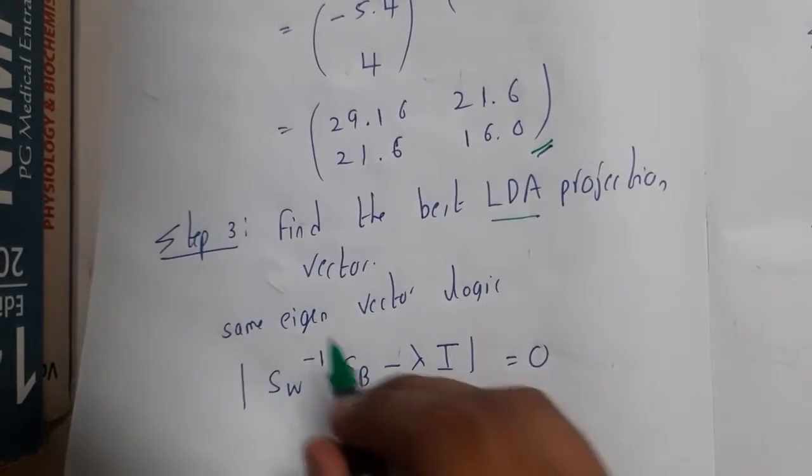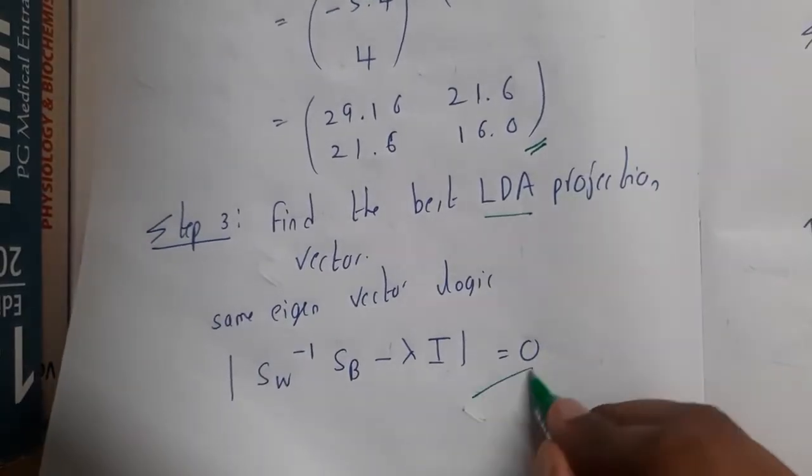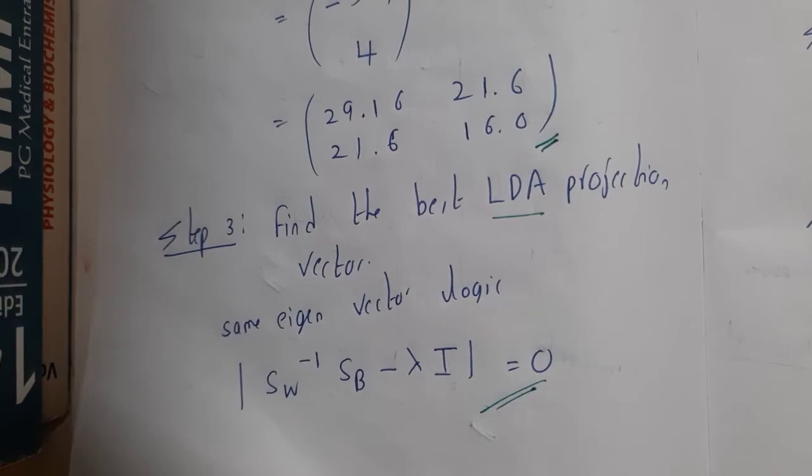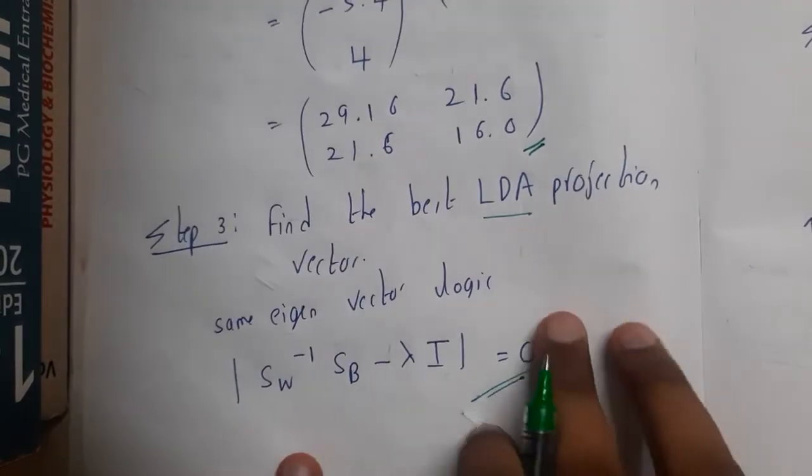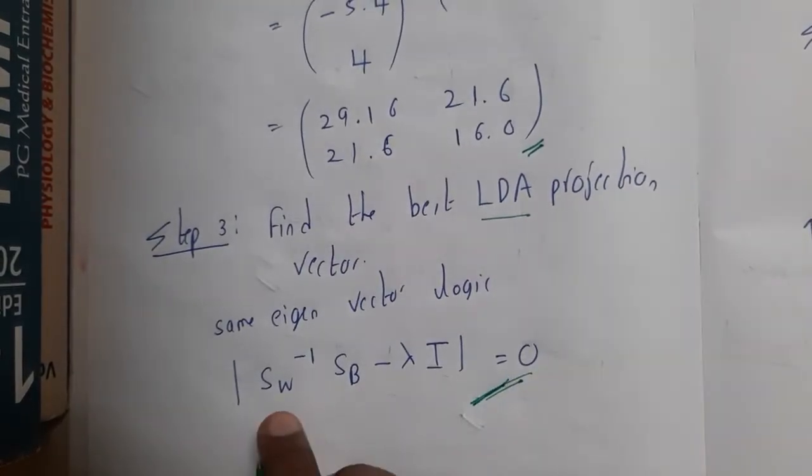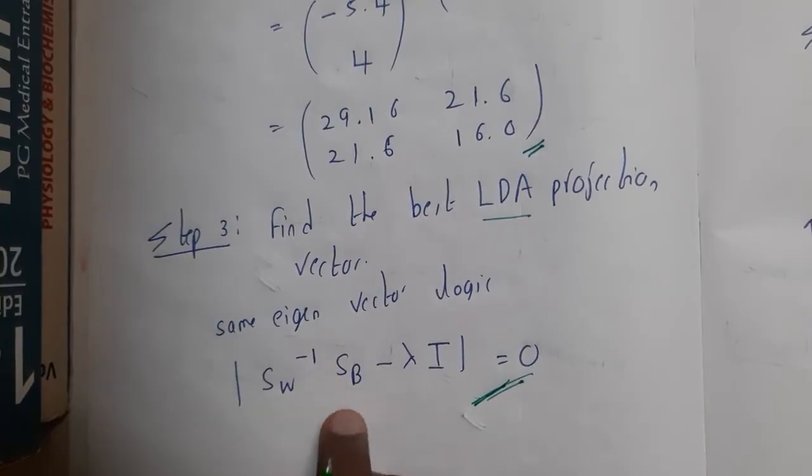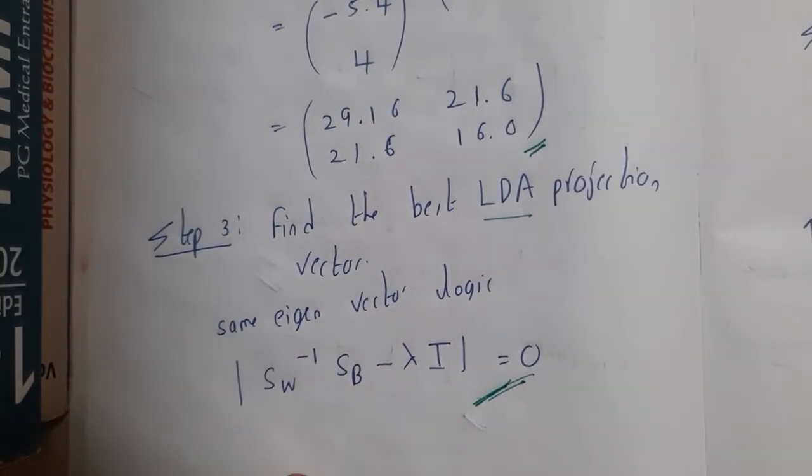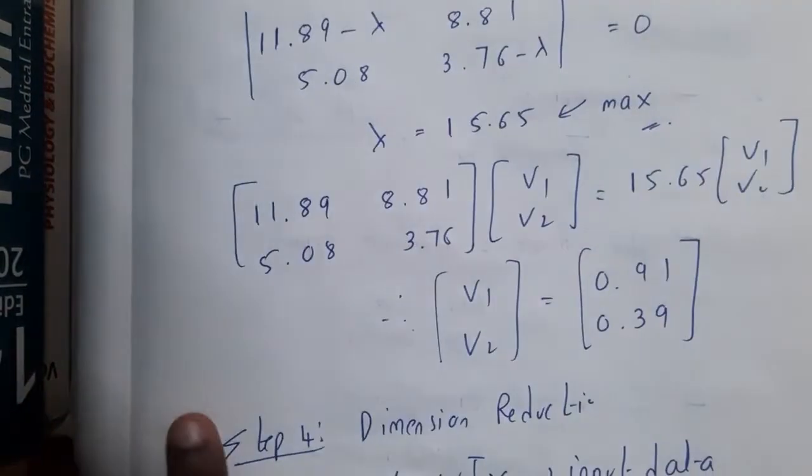Once you got this matrix, we are having a formula of LDA projection. The formula will look in this way. This is all formula-based. That is the reason why even I did not find anything interesting in this topic. That is the reason why even I am not interested in explaining. You will be taking this formula, you will be substituting Sw inverse SB and lambda and I, that is nothing but your identity matrix.